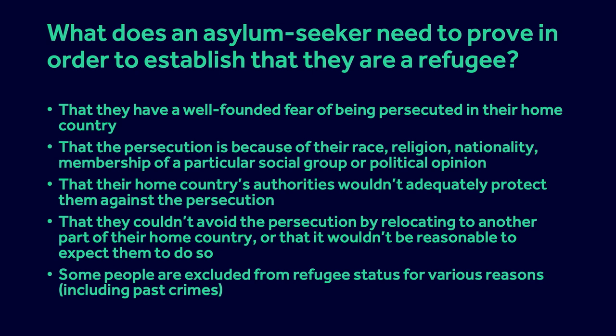When a person claims asylum, there are several things they must prove. First, they must have a well-founded fear of persecution in their home country. Second, the persecution must be for one of the five convention reasons: race, religion, nationality, membership of a particular social group, or political opinion. Third, if the persecution is from non-state actors, they must prove that their home country's authorities would not adequately protect them. Fourth, they must prove they could not avoid the persecution by relocating to another part of their home country — and it must also be reasonable for them to do so. Some people are excluded from refugee status because of past crimes, but those are the general principles.